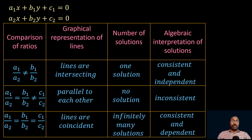So the number of solutions for the given equations is 0 and the two equations are said to be inconsistent. And if a1/a2 = b1/b2 = c1/c2, then the lines represented by the given equations are coincident, that is they are equivalent. In this case, they will have infinitely many solutions — every point on the line is a solution of the given equations. The two lines are said to be consistent and linearly dependent in this case.